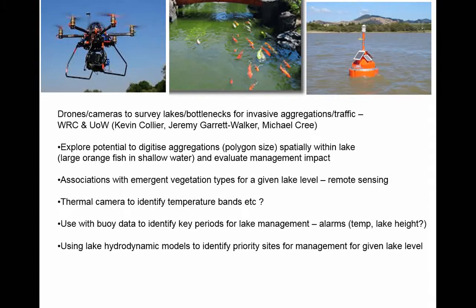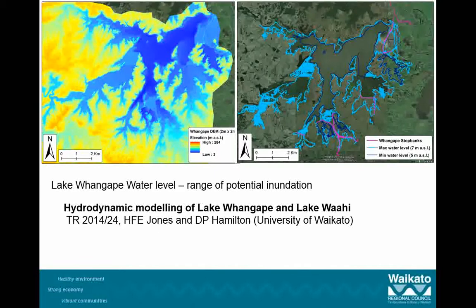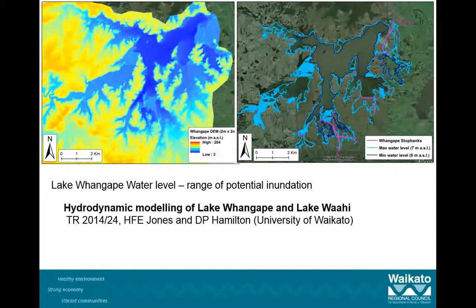This is a piece of work that Kevin got Hannah Jones and David Hamilton from the university to do. This is Lake Fonglapay, with hydrodynamic models looking at levels of inundation — the dark blue line showing minimum water level and the lighter blue the maximum. You can automatically see the areas to target for a given lake height. If you digitise your vegetation over that and use drone technologies from the sky to get an overview, you can really refine these target places and start to get somewhere.